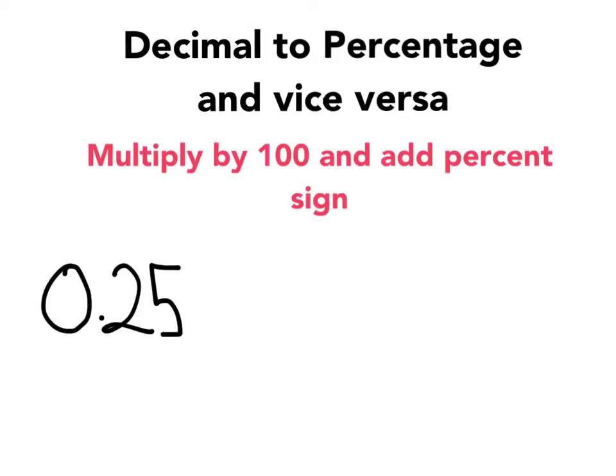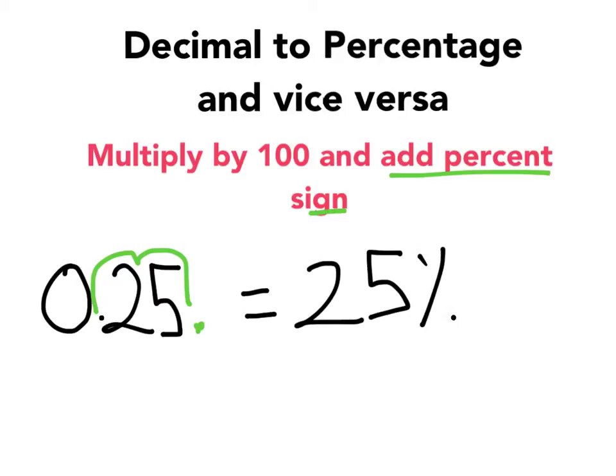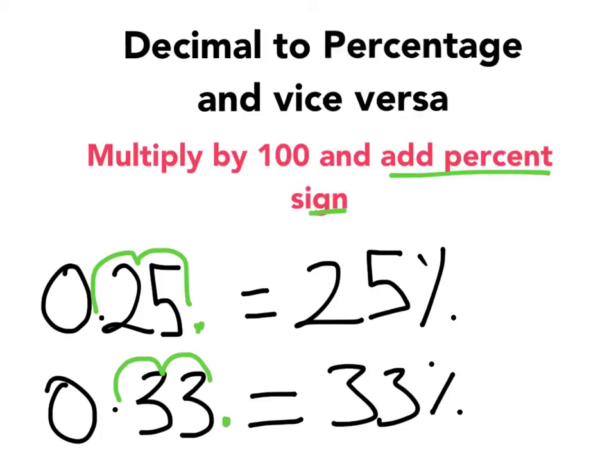From 0.25, this is how we do it. We move one, two. Two places to the right or I multiply by 100. It's only two places if it's 100. So, that becomes 25. And I add the percentage sign. 25%. 0.33%. That's as a decimal. How do I get it as a percentage? One, two. Two places to the right. 33%. Very straightforward, guys.